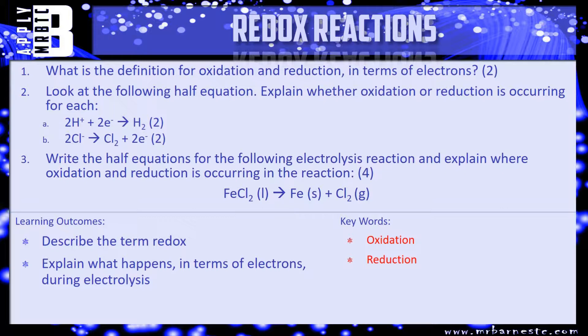Question two: you've been given two half equations, so it says look at the following half equations, explain whether oxidation or reduction is occurring for each. So you get one mark for saying whether it's oxidation or reduction, and one mark for saying why. So look at your 2H+, has it had electrons added or taken away? Same with the chlorine. OIL RIG, so is it oxidized or reduced?